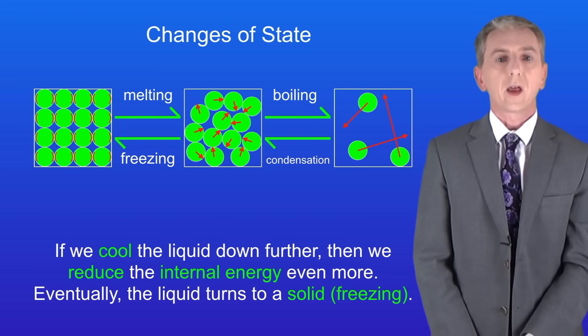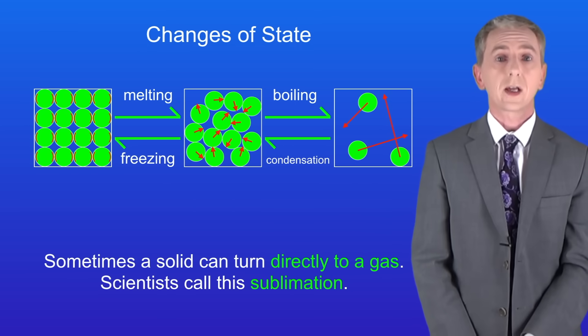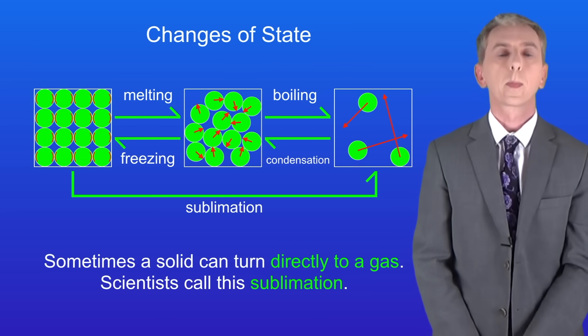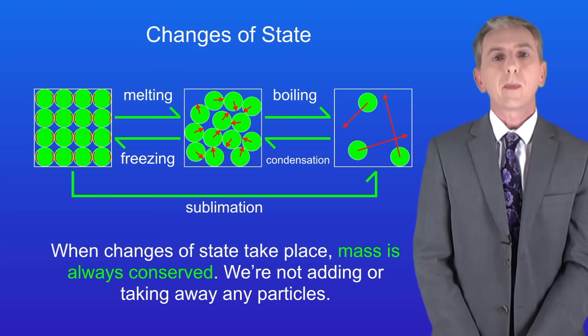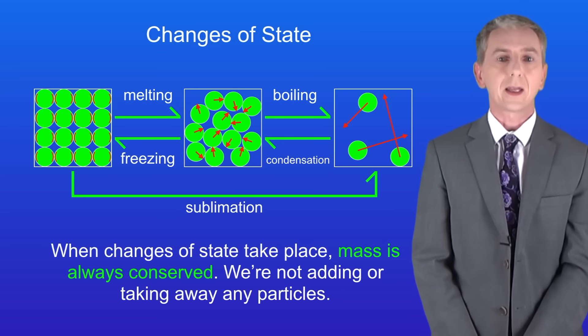Now there are a few other points that we need to look at. Sometimes a solid can turn directly to a gas. For example carbon dioxide does that at room temperature and pressure. Scientists call that sublimation, and I'm showing that here. Secondly, remember that when changes of state take place, mass is always conserved. We're not adding or taking away any particles.